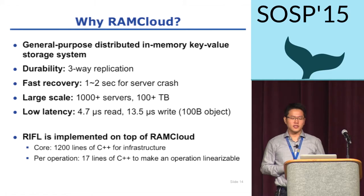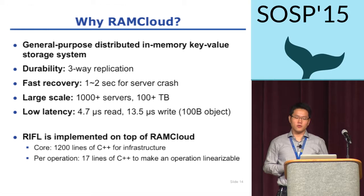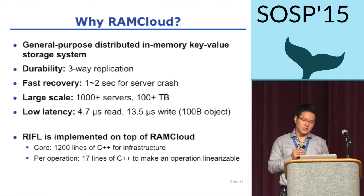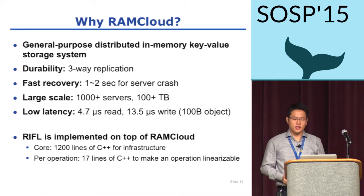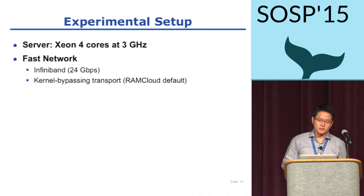RAM Cloud's fast crash recovery made retry rendezvous a non-trivial problem. The Riffle core infrastructure for RAM Cloud is about 1,200 lines of C++. With the Riffle core, only 17 lines were needed to transform a single non-linearizable operation into a linearizable one. Using Riffle, we made simple write, conditional write, and increment linearizable, and all three operations have almost the same latencies, so we only report the simple write latency today.